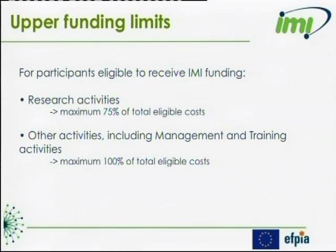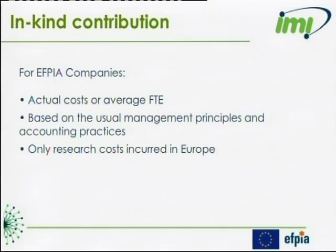As in other community or public programs, there are some limits for funding research activity, management activity, and training activities. Concerning research activity, the limit is 75% of the eligible costs incurred by a participant. Concerning management and training activity, it may be 100% of the eligible costs incurred by a participant, with no distinction between management and training costs, and no differentiation between different types of participants.